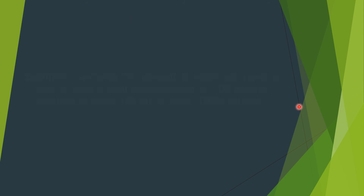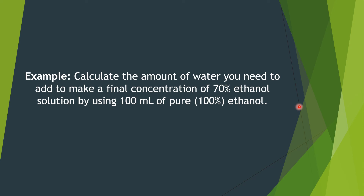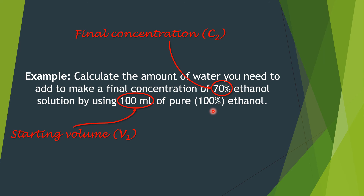Let's look at another example. Calculate the amount of water you need to add to make a final concentration of 70% ethanol solution by using 100 millilitres of pure 100% ethanol. The final concentration of 70% ethanol is C2, the 100 millilitres of pure ethanol is the starting volume V1, and the concentration of the starting ethanol solution is 100%, which is C1. We need to calculate V2 using the C1V1 equation.